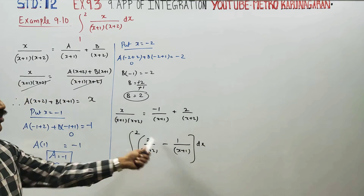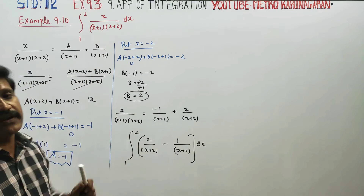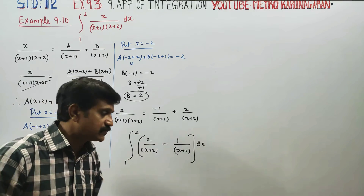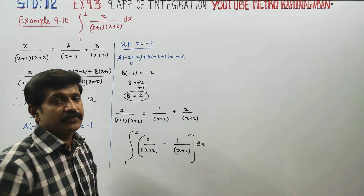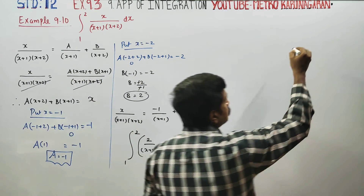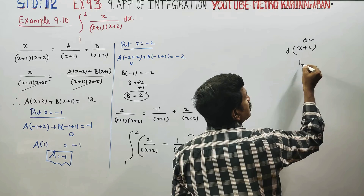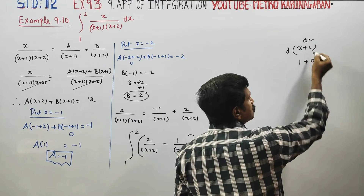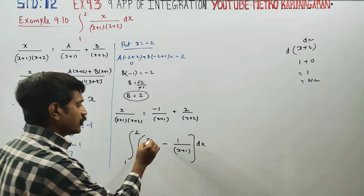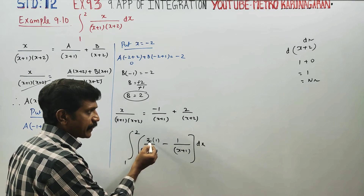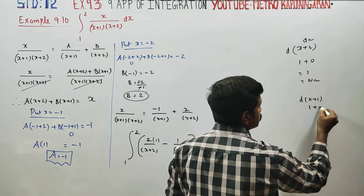The numerator is the derivative of the denominator in each term. Differentiating x plus 2 gives 1, and differentiating x plus 1 gives 1. So both numerators match the derivative of their denominators, and the integration formula gives logarithm.